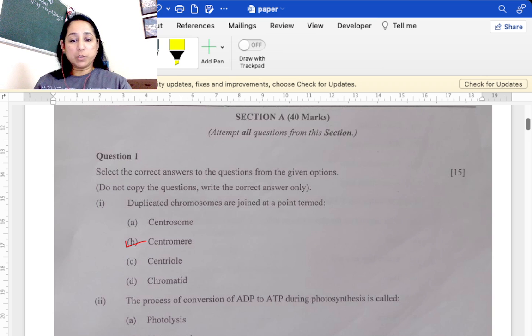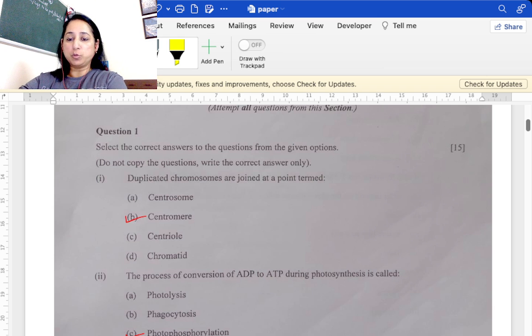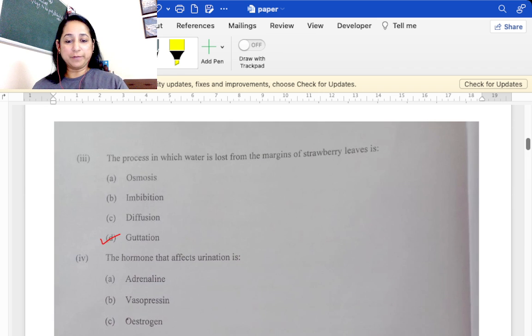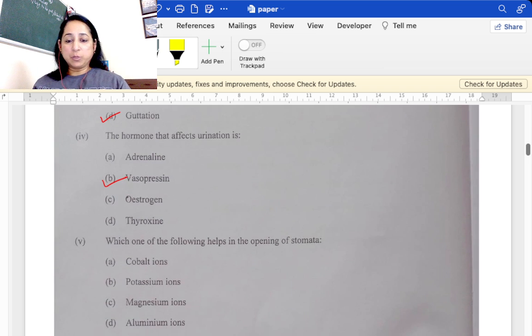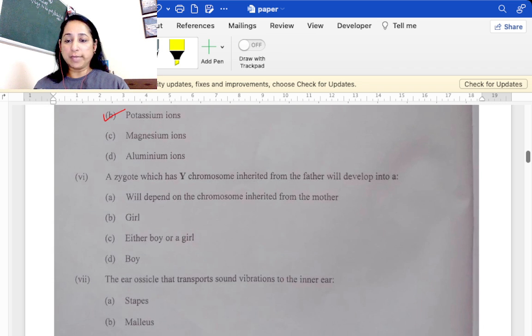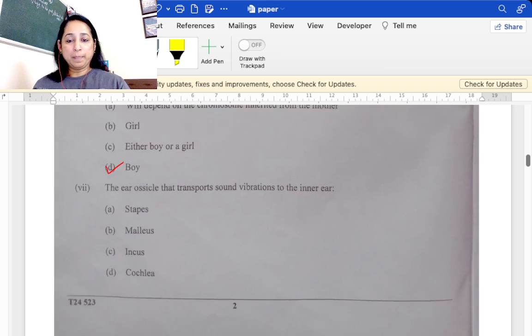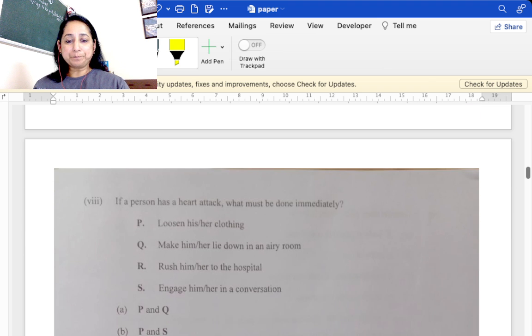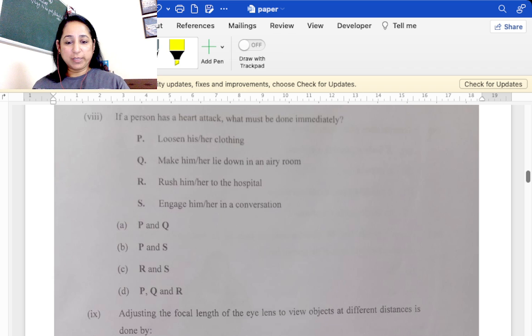First one, it is option B, duplicated chromosomes joined at centromere. Second, it's C, photophosphorylation. Third is D, guttation. Fourth, hormone that affects urination, that is vasopressin. Which helps in opening and closing of stomata? Potassium ion theory. Zygote which has Y chromosome inherited from father will develop into a boy. Ear ossicle that transports sound vibrations is stapes, attached to the cochlea.